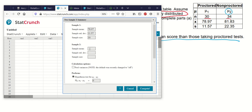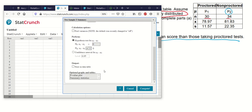For our second sample, sample two, sample mean is 81.83. Sample standard deviation is 22.35. And the sample size is 34.